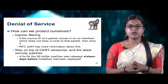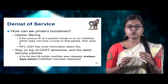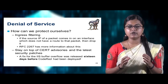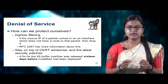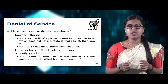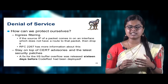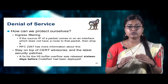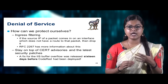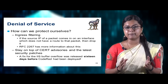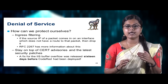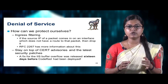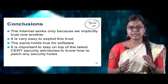To protect against DoS attacks, we can use a method called ingress filtering. In ingress filtering, if the source IP of a packet arrives on an interface that has no route back to that source, that packet is dropped. RFC 2267 has more information about ingress filtering. We also need to stay on top of CERT advisories and the latest security patches — a fix for the IIS buffer overflow was released 16 days before Code Red and had been deployed.